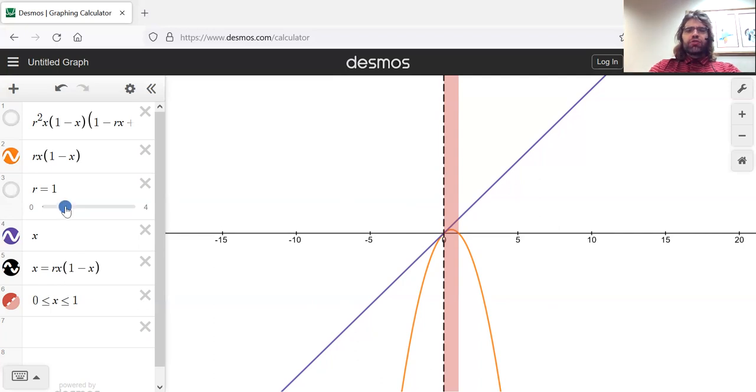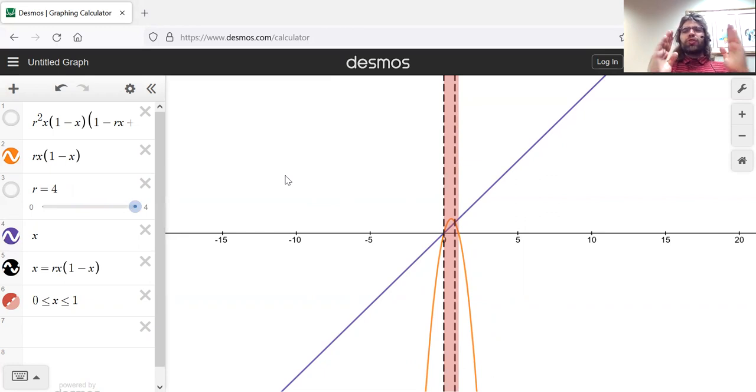As R increases further, these fixed points unmerge, and now we have two fixed points, and they're both of interest to us. They're both in this interval that we are looking at. And that persists as R increases to four. So from two fixed points, only one of which was relevant to us, down to one fixed point, which is relevant to us, to two fixed points again, and this time both of them are relevant.